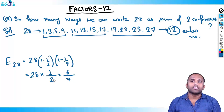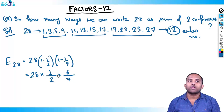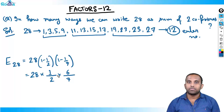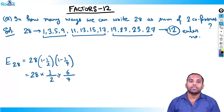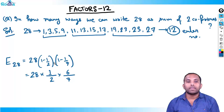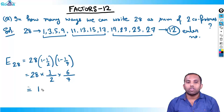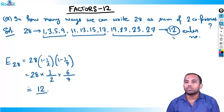Always write the result directly — time is very important in exams. So 28 × 1/2 × 6/7 gives us 12. The Euler number of 28 is 12.